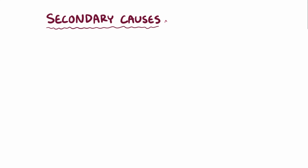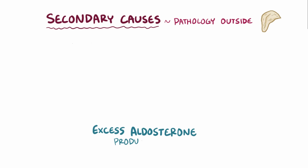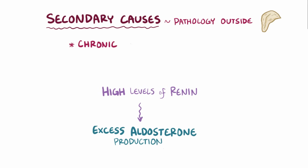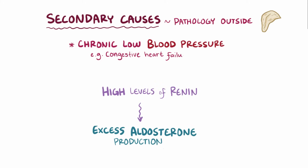Hyperaldosteronism can also be due to secondary causes, where the pathology lies outside the adrenal gland. Secondary causes are usually due to excess aldosterone production in response to high levels of renin, which might happen when there's a chronic decrease in blood pressure, like in congestive heart failure or cirrhosis.